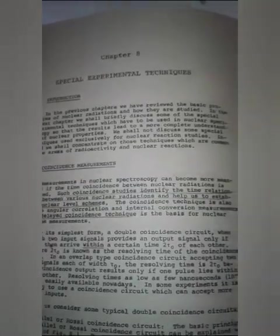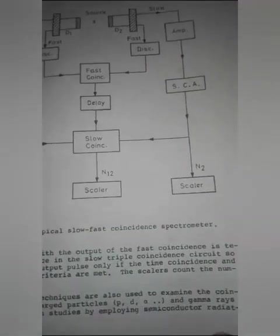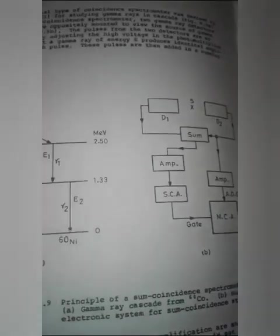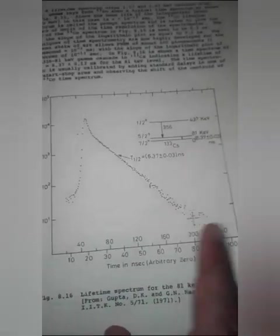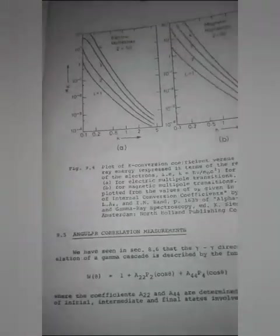Chapter 8 on special experimental techniques includes a typical slow-fast coincidence spectrometer, lifetime measurements, measurement of electron spectra, measurement of X-ray and gamma ray spectra, and analysis of nuclear spectroscopic data. Also covered are determination of nuclear spins and parities, internal conversion coefficients, angular correlation measurements, determination of nuclear moments, and measurements of lifetimes of nuclear states.